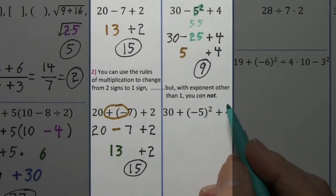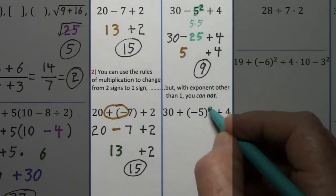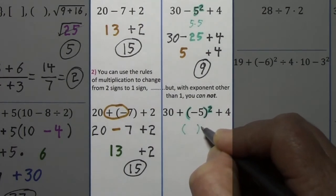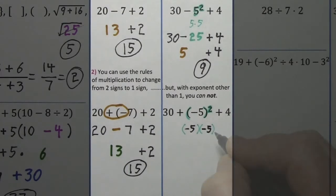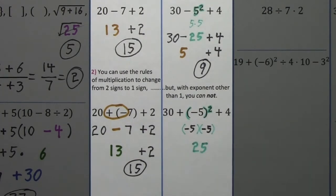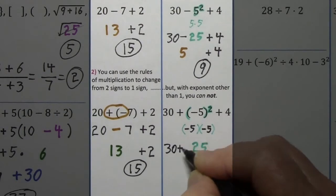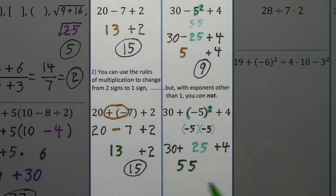With an exponent other than one, you cannot just use the rules of multiplication — you must deal with the exponent first. The exponent applies to whatever it touches; in this case, that's parentheses, so we have two sets each containing negative 5. Negative times negative is positive, giving us 25. Bring down the positive sign, the 30, and the positive 4. The signs are the same — add and keep the sign. Bring down what you haven't touched, and that's the final answer.